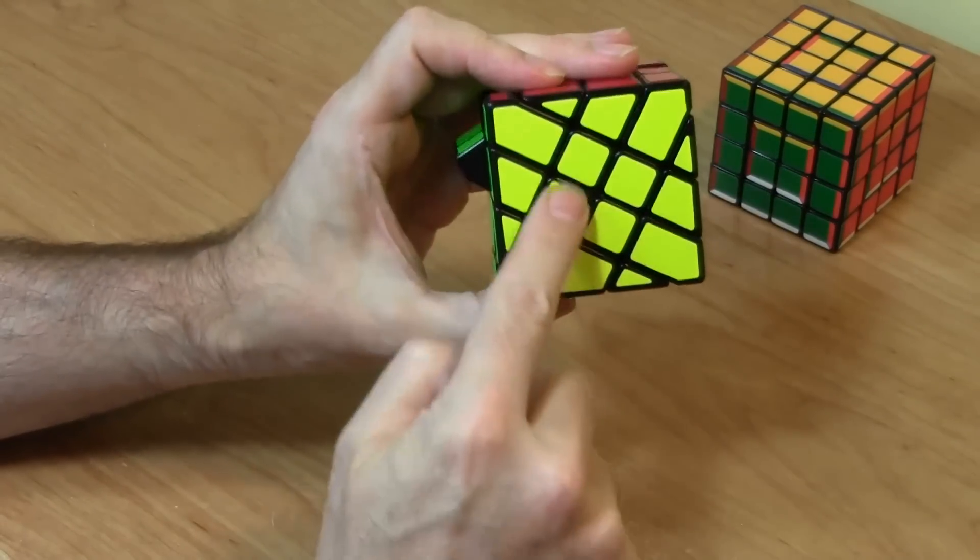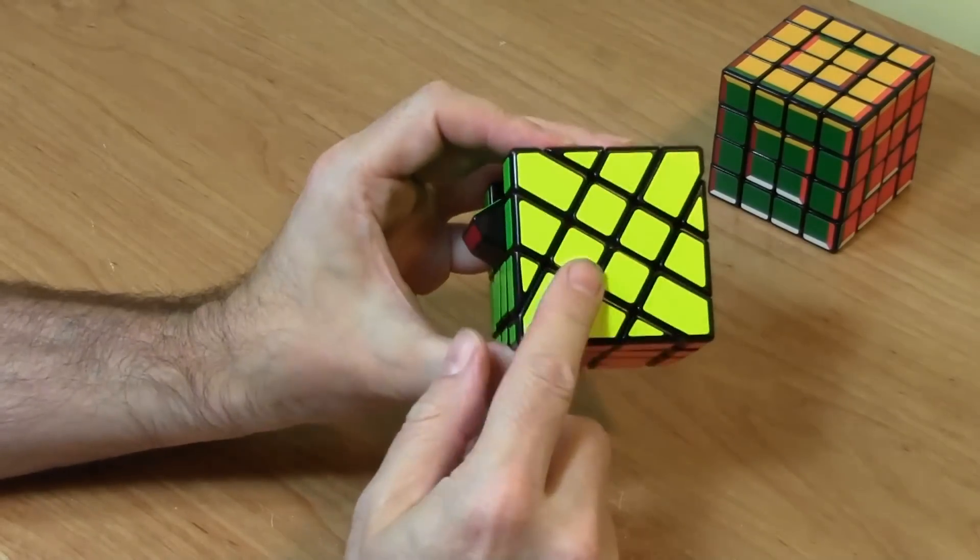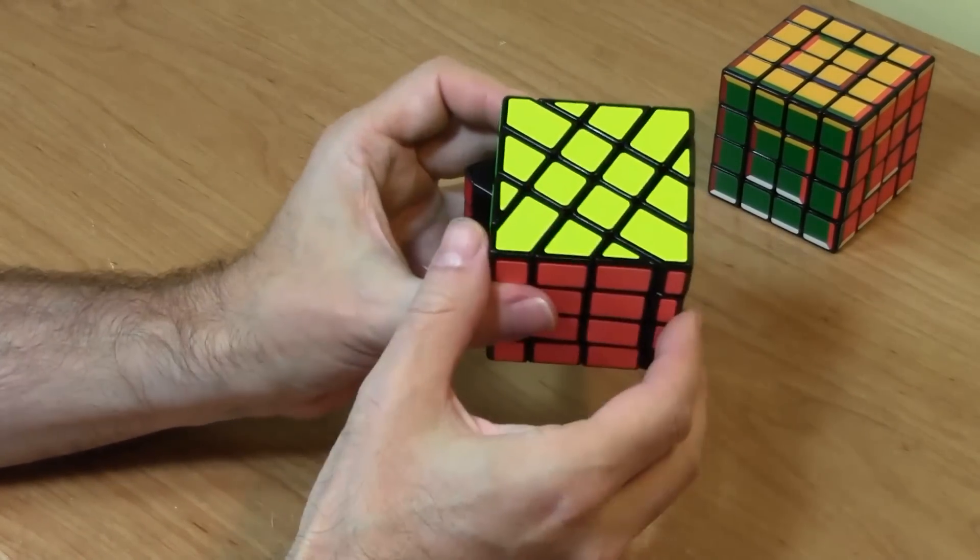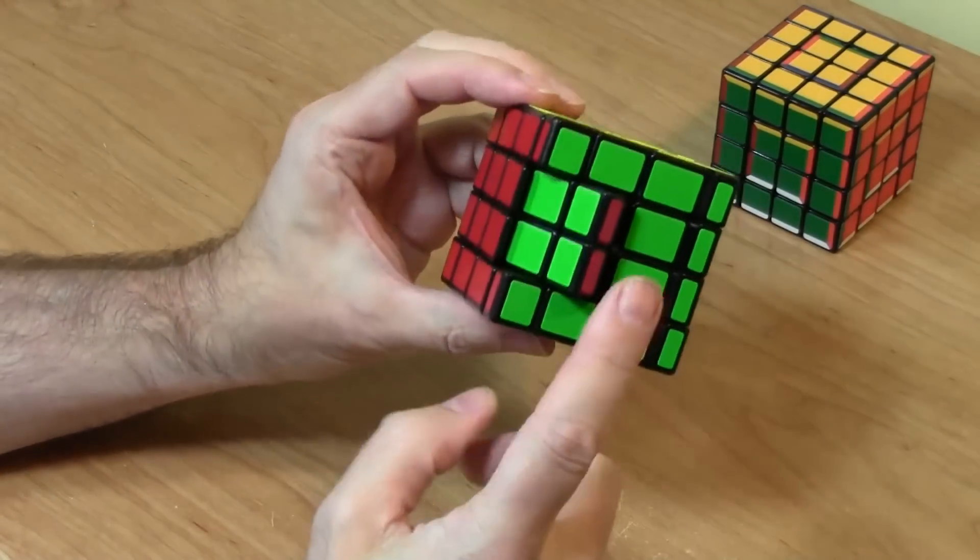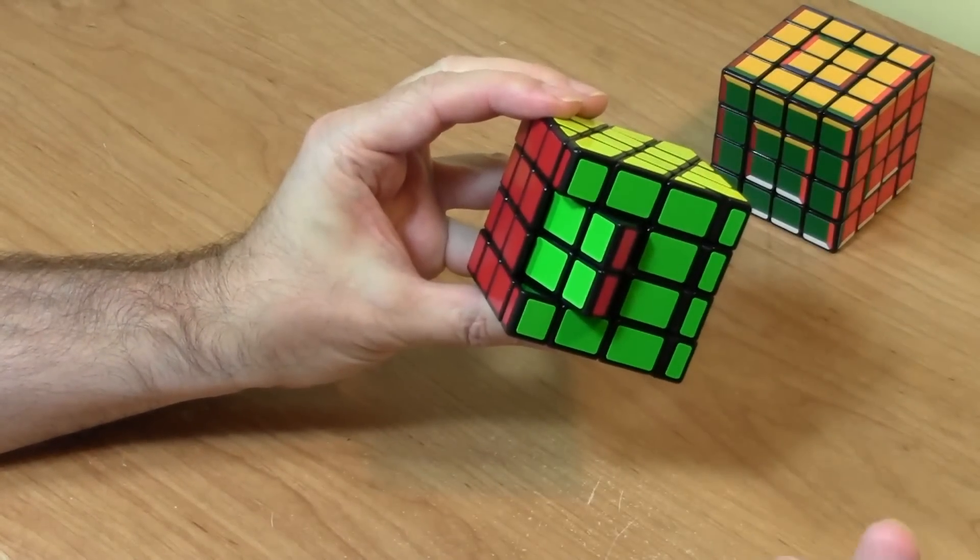Now because these pieces are all the same on the U, the yellow face, it doesn't look like anything changed. But it actually has rotated 180 degrees. But we've rotated our side face here also 180 degrees.